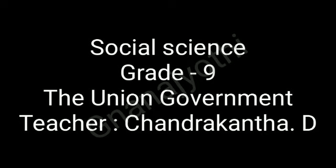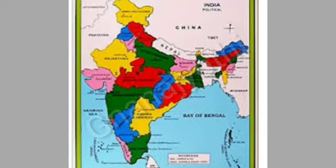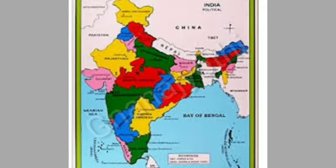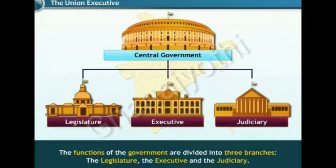Hello Gnana students, welcome to the social science class about the union government of India. In this chapter, you are going to study the learning points: information about union legislature and union executive. We have learnt in the previous lesson that India is a sovereign, socialist, secular, democratic republic. That means there is a union government at the center and state governments in the states. India is a union of states, and the powers of the nation are divided between the center and the states. It exercises these powers through the legislature, executive, and judiciary.